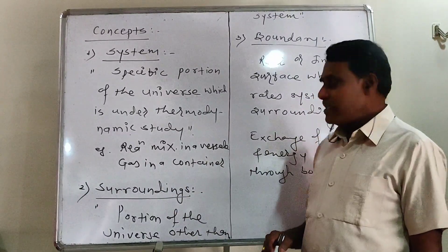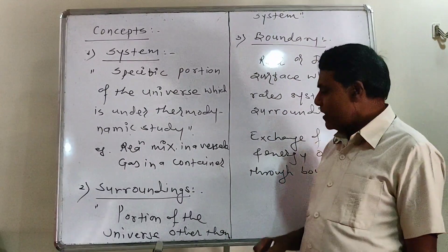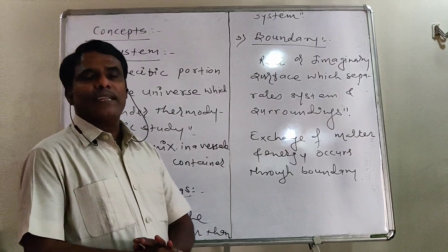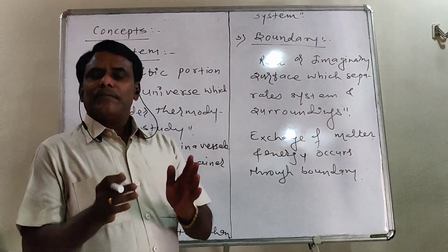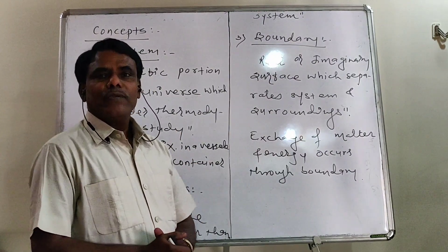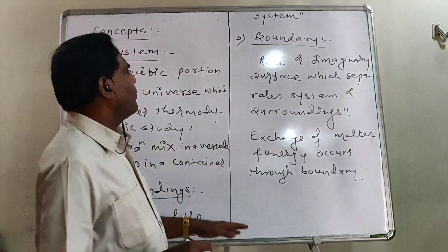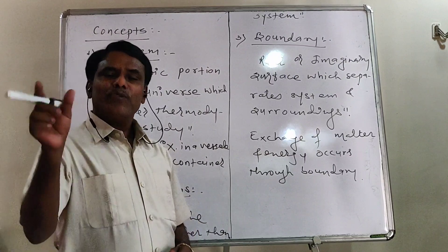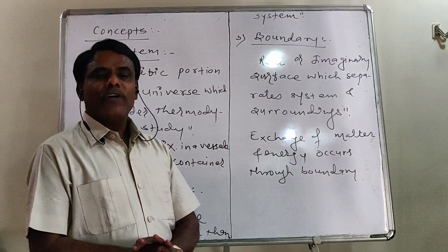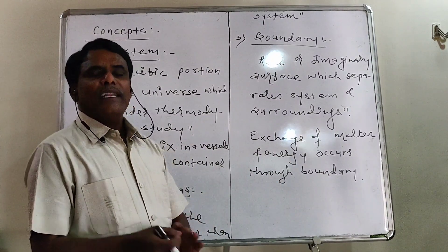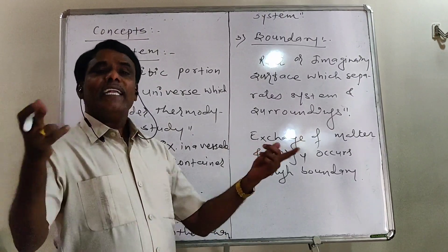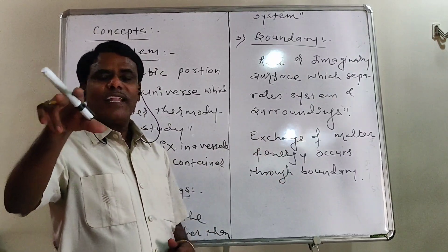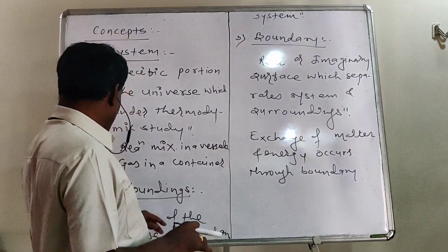Second concept: Surroundings. It is that portion of the universe other than the system. Practically, it is the portion of the universe which is in the neighborhood of the system. For example, if we carry out a reaction in a chemical lab, that reaction mixture is the system, and the space in the lab acts as the surroundings.